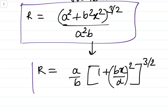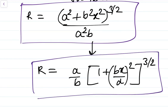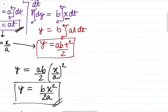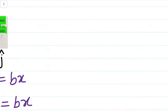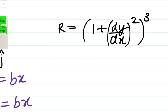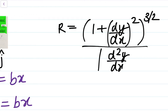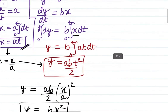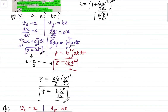I hope you have understood this carefully — radius of curvature is very important. If you wanted, you could also solve this using the formula R = (1 + (dy/dx)²)^(3/2) / |d²y/dx²| by substituting the trajectory equation, and you would arrive at the same result.